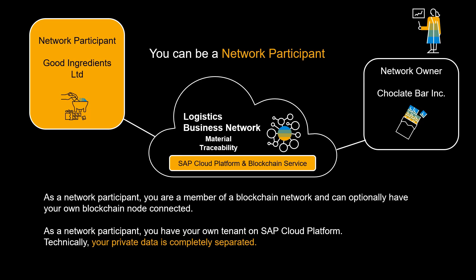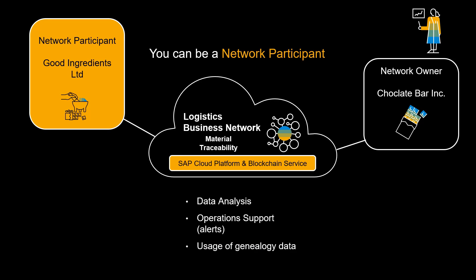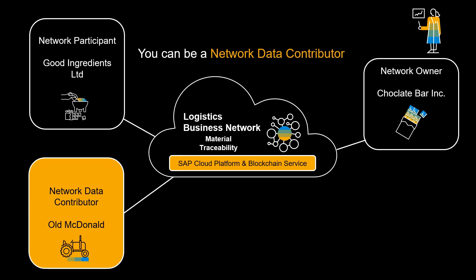As a network participant, you are a member of a blockchain network and can optionally have your own blockchain node connected. As a network participant, you have your own tenant on SAP Cloud Platform. Technically, your private data is completely separated. Your responsibility and capabilities include data analysis, operations support, and usage of genealogy data.